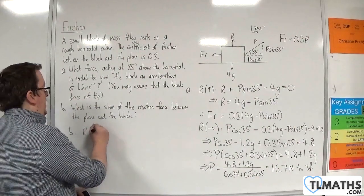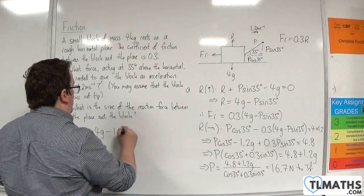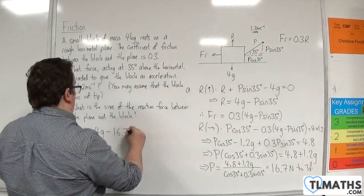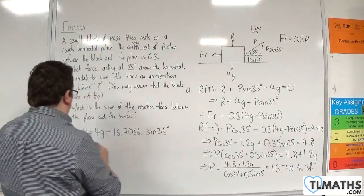So I've got R is going to be equal to 4G take away, and it was 16.7066 etc., sine of 35 degrees.